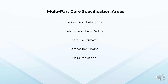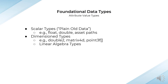The multi-part Core Specification consists of five interrelated areas. The foundational data types area defines attribute value types, including straightforward scalar types such as floats and doubles, as well as USD-specific value types such as asset paths serving as resource identifiers. Dimension types come as tuples such as double2, and linear algebra types such as a 4x4 matrix of doubles, or an array of floating point triples serving as point coordinates.